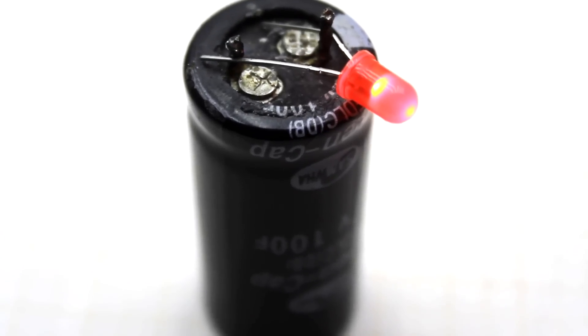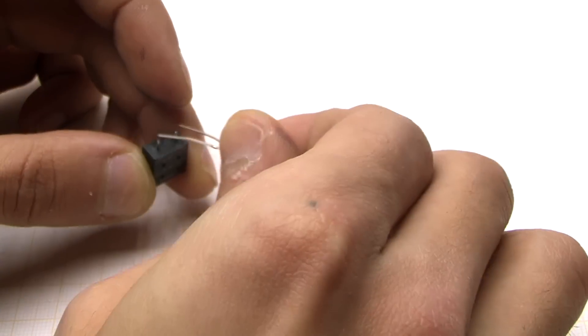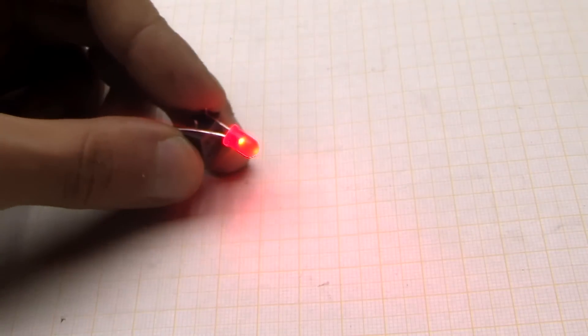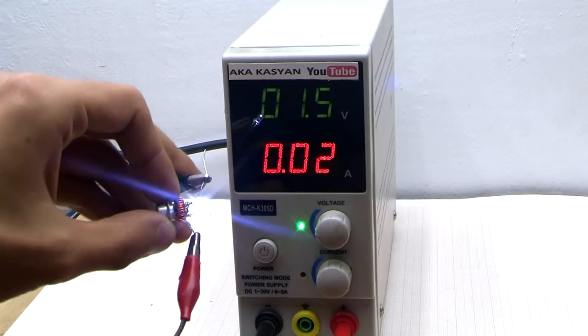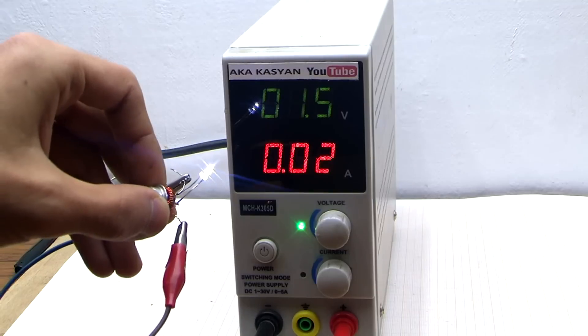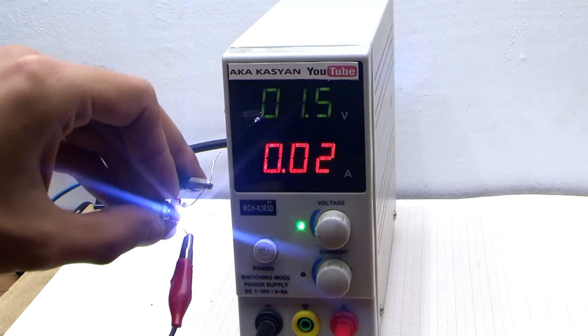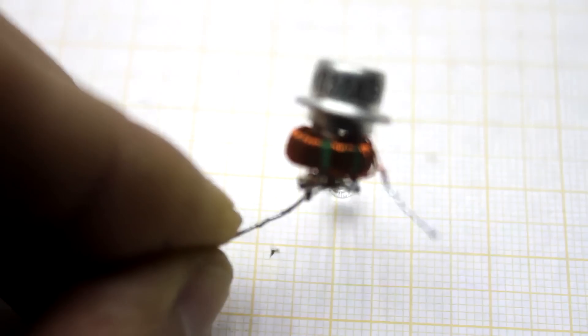Therefore, the LED will not light up until the required voltage will be applied to the ionister. The converter will allow increasing, given a minimal voltage to the required level and ensuring a normal glow of the LED by sucking out all from the ionister.